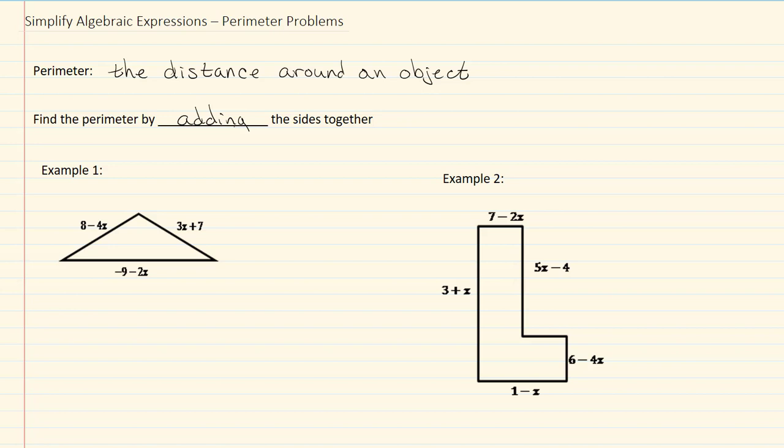So if we look at example one, we have 8 minus 4x, 3x plus 7, negative 9 minus 2x.